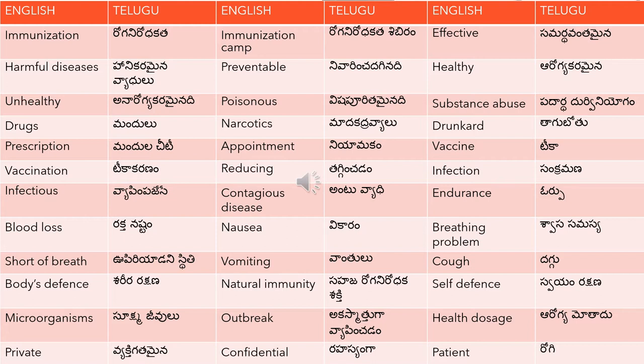Vomiting is 'vantulu'. Cough is 'duggu'. Body's defense mechanism is 'sarira rakshana'. Natural immunity is 'sahaja roga nirodha kata sakti'. Self-defense is 'swayam rakshana'. Micro-organisms is 'sukshma jeevalu' — 'sukshma' means micro, 'jeevalu' means organisms.